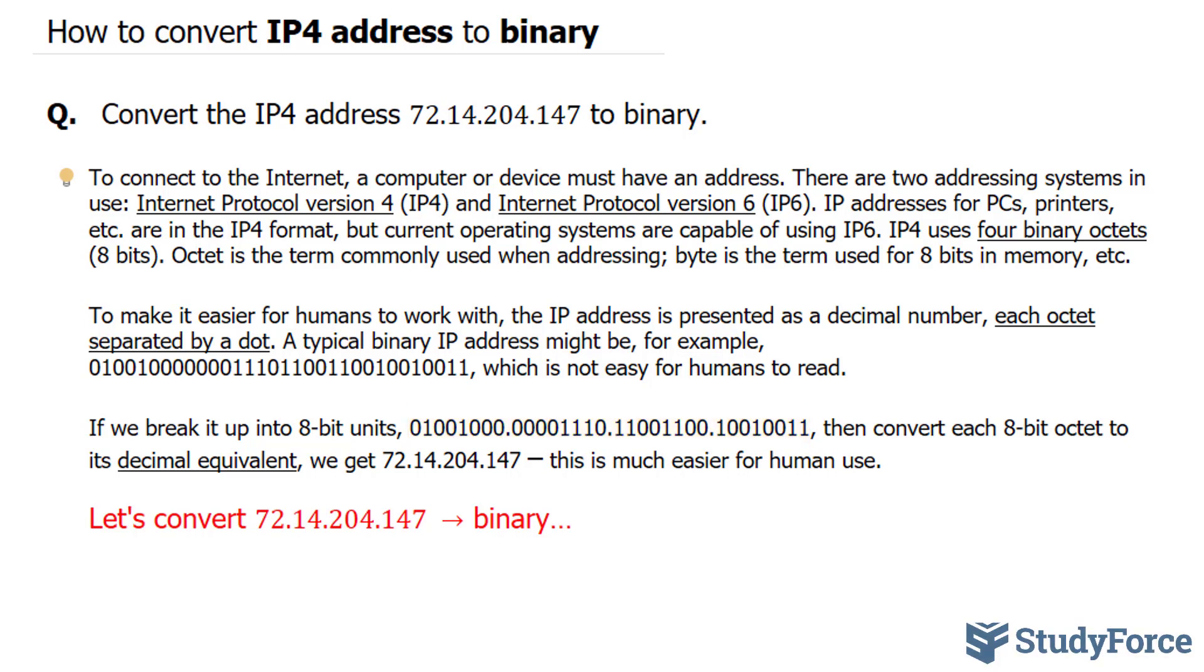As mentioned, to make it easier for humans to work with, the IP address is presented as a decimal number. And if we break it up into 8-bit units, like so, then convert each 8-bit octet to its decimal equivalent, we will end up with something that looks like this.